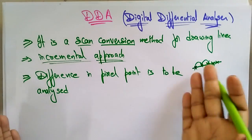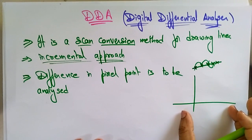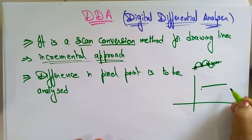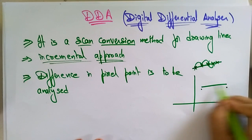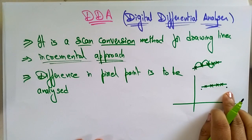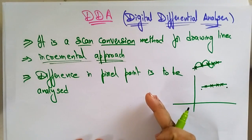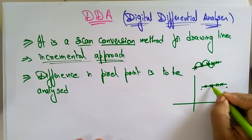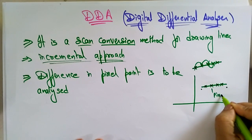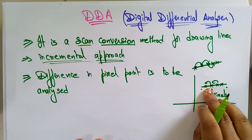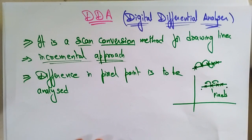If you want to draw a line on the graph, you have a starting point and an ending point. To reach the ending point you have to find out the intermediate floating points — with the help of those floating points only, the line segment can be drawn. The difference between the pixel points is analyzed and then the line can be drawn.